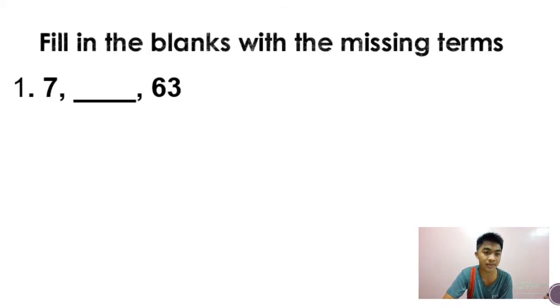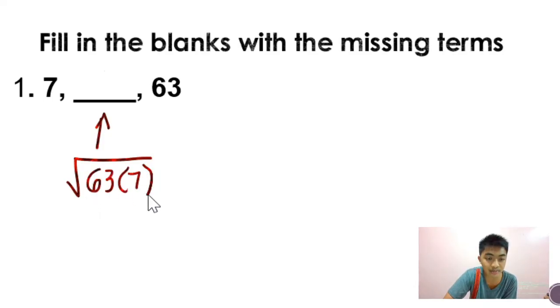Let's have sample problems. So fill in the blanks with the missing terms. So hahanapin natin yung geometric mean in between 7 and 63. And to do that, kailangan natin malaman yung common ratio. But actually, may shortcut kung paano kukunin ang middle term. Since we only have one middle term, we can actually do this method. Para makuha yan, we can actually take the square root of their product. So 63 times 7, 441. And the square root of 441 is 21.